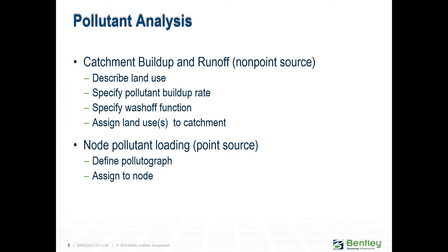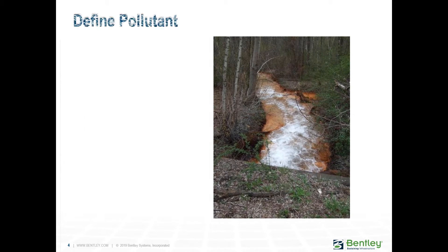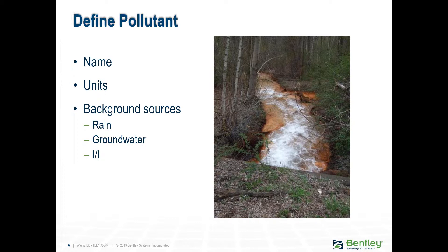If you're going to use a point source, you need to define first the pollutograph and then assign it to a node. To use a pollutant, you need first to define it and some of its properties — like name, units, and the background source. That can be rain, groundwater, or an infiltration and inflow.